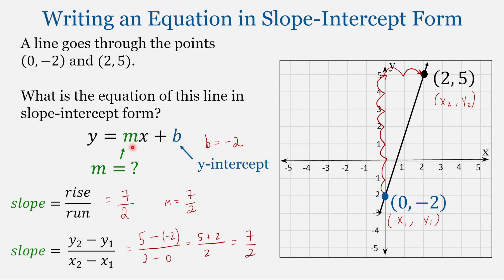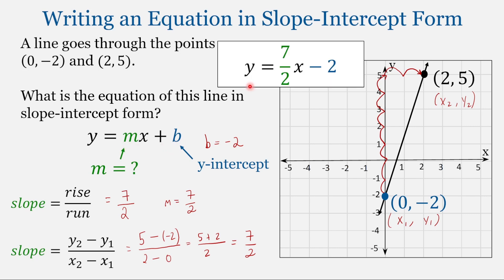So we now know both the slope m and y-intercept b. So we can write the equation of a line that passes through the points (0, -2) and (2, 5). If you need a review of finding the slope of a line from two points, I put a link in the description.